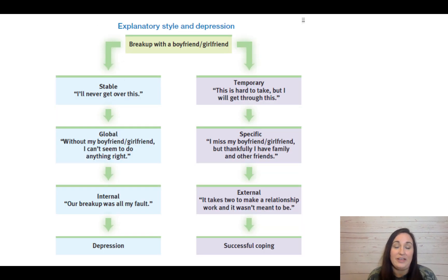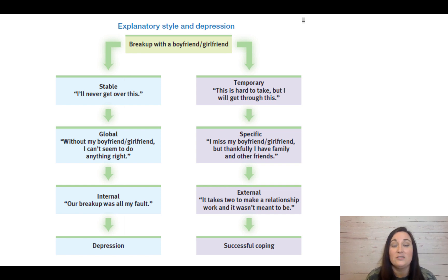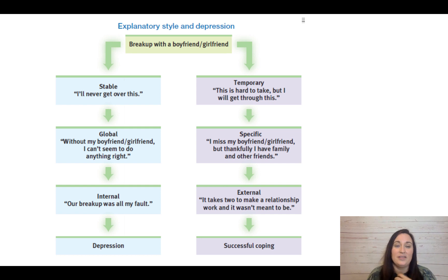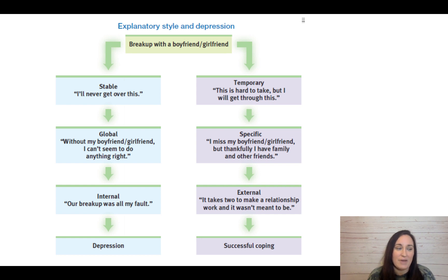Here's a look at the negative explanatory style for someone with depression. A stressor occurs — for example, a breakup. The person views their emotional state as stable: 'I will never get over this; it will never get better.' It's also global: 'Without my partner, I can't seem to do anything right — everything is wrong, not just that one thing.' And it's internal: 'Everything bad is my fault.' Imagine this person going throughout their entire day always looking at things as stable, global, and internal.